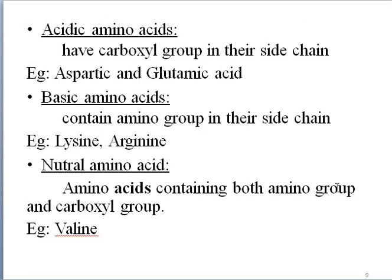Amino acids are also classified as acidic, basic, and neutral. Acidic amino acids have only a carboxylic group — examples are aspartic acid and glutamic acid. Basic amino acids have only an NH2 group — examples are lysine and arginine. Neutral amino acids have both acid and amino groups — an example is valine.